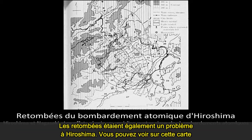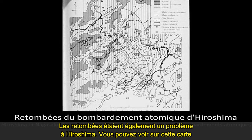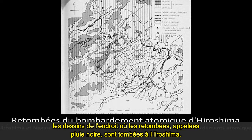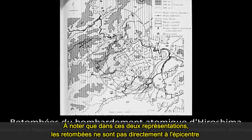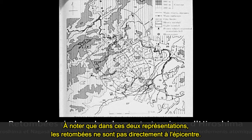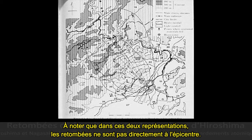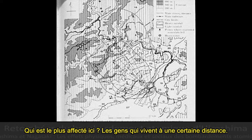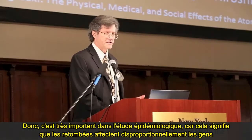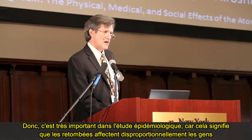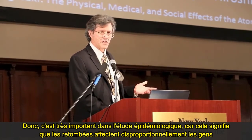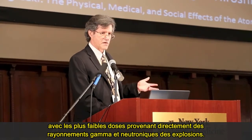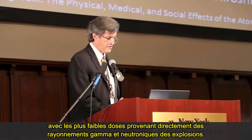Fallout was also a problem in Hiroshima. In maps of where the fallout — the so-called black rain — came down, note that in both cities the fallout is not primarily right at the hypocenter. People further away were more affected. This is very important epidemiologically because the fallout disproportionately affected people with the lowest direct doses from the gamma and neutron blast.